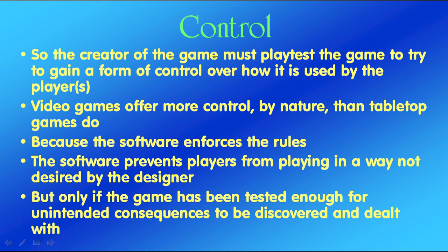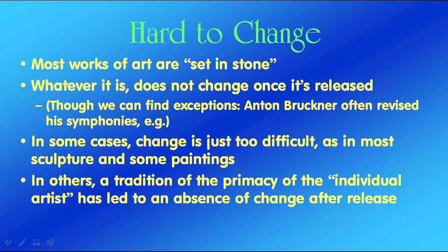Video games offer more control by nature than tabletop games do because, in a video game, the software enforces the rules, whereas in a tabletop game, the players have to enforce the rules. The software prevents players from playing in a way not desired by the designer — but that's only if the game has been tested enough for unintended consequences to be discovered and dealt with. We have all heard of video games where unintended consequences led to perfect strategies or the invention of entirely new things, like rocket jumping. That was not designed by the designer — it just happened. People figured out how to do that. So we're testing to look for emergent results that are undesirable so that we can find ways to remove them from the game.